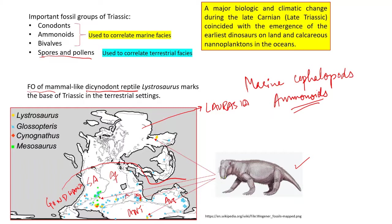Pollens, spores, and fossils like Lystrosaurus have been used to correlate the terrestrial facies. During the late Triassic, a major biological and climatic change was occurring, coinciding with the emergence of the earliest dinosaurs on land and calcareous nannoplanktons in the ocean. In the fossil record, you will not find the first occurrence of calcareous nannoplanktons before the Triassic.